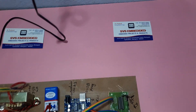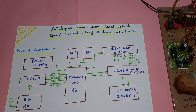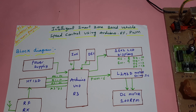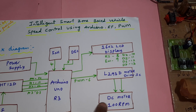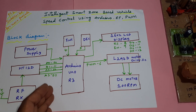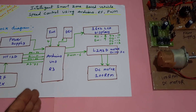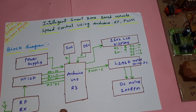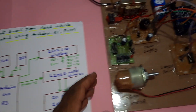Hi, we are from SVS Embedded. The project title is Intelligent Smart Zone Based Vehicle Speed Control using Arduino with RF communication and vehicle motor speed control using PWM technique. For school zones, college zones, parks, gardens, or any restricted area, there should be speed control, so we are using an RF transmitter with multiple zones.